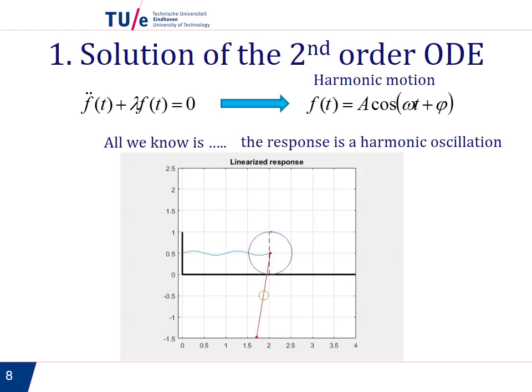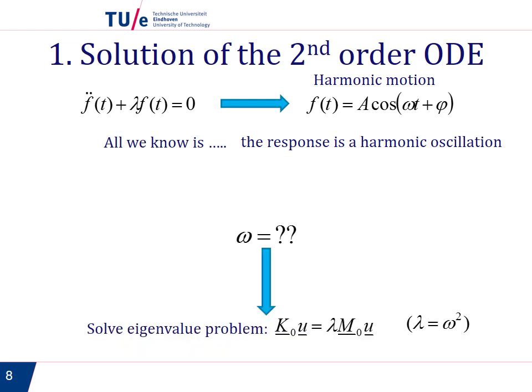But what we don't know is what is the frequency of this oscillation. To find this out, we need to solve the eigenvalue problem. The solution of the eigenvalue problem will tell us what the frequency of this oscillatory motion is.